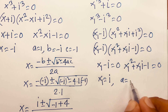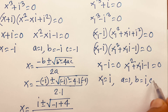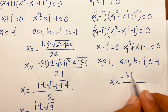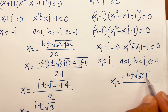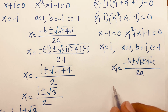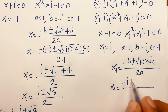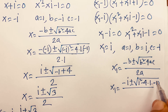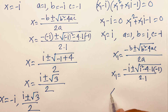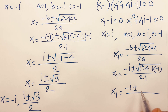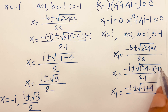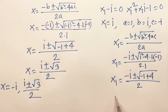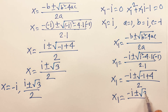For this quadratic, a equals 1, b equals i, and c equals minus 1. Applying the quadratic formula: x1 equals minus b plus or minus square root of (b squared minus 4ac) over 2a. Substituting: x1 equals minus i plus or minus square root of (i squared minus 4 times 1 times minus 1) over 2, which gives minus i plus or minus square root of (minus 1 plus 4) over 2.